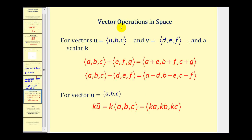Finally, vector operations in space (R3) are very similar to vectors in R2. To add or subtract vectors in space, simply add or subtract the corresponding components. For scalar multiplication, multiply k times each component of vector U. Since these procedures are similar to R2, examples won't be shown here for R3. I hope you found this video helpful. Thank you for watching.